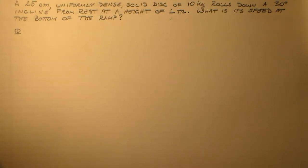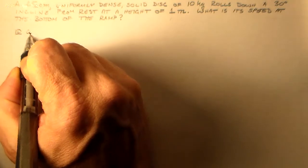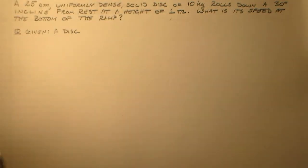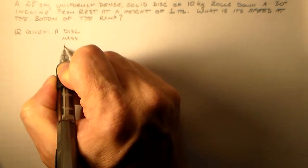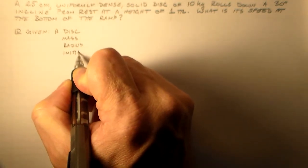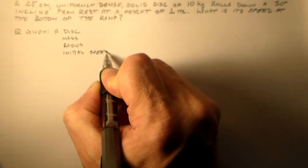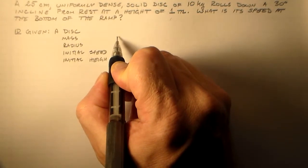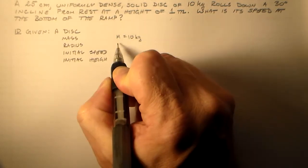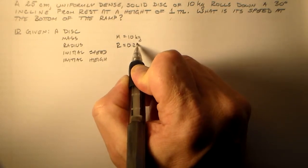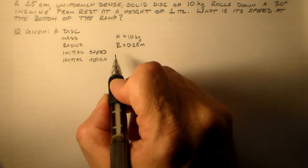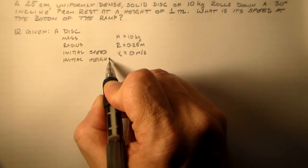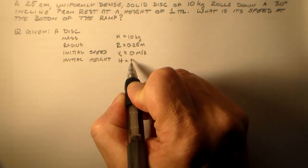So here we want to see what we have. We've got a couple of things that we have to worry about. One, we have, we're given a disk. So that rolls, but all we care about is that it's a disk. And it has a mass and it has a radius and it has an initial speed and it has an initial height. And that mass is m equals 10 kilograms. That radius is r equals 0.25 meters. That initial speed is 0 meters per second. It's not moving initially. And the initial height is h equals 1 meter.